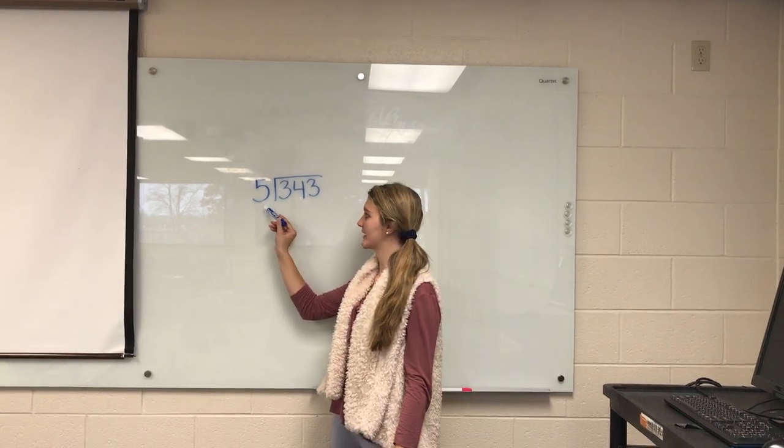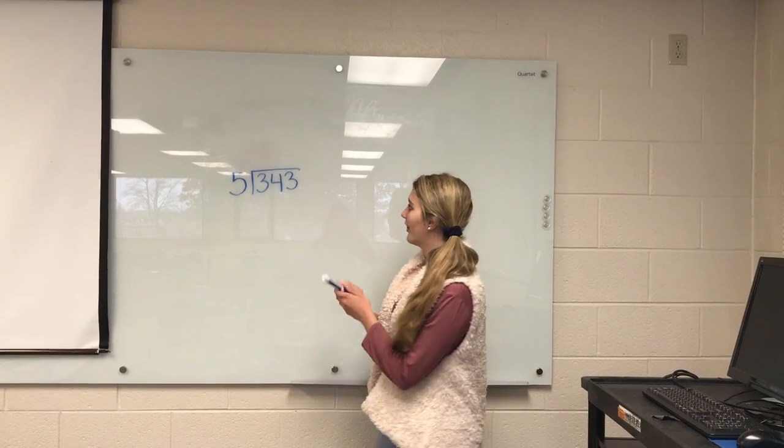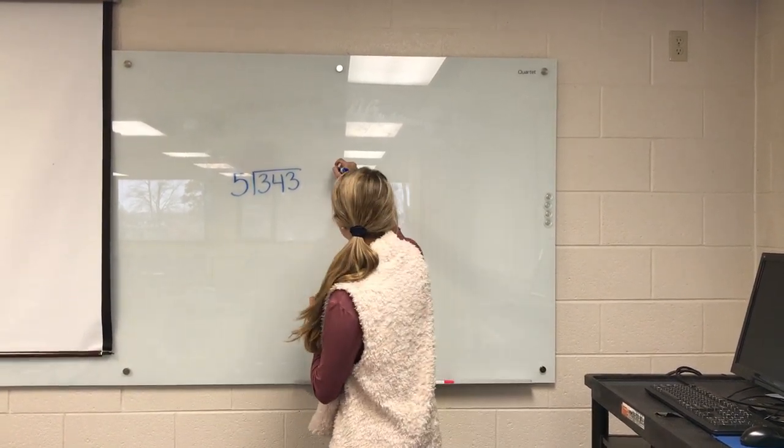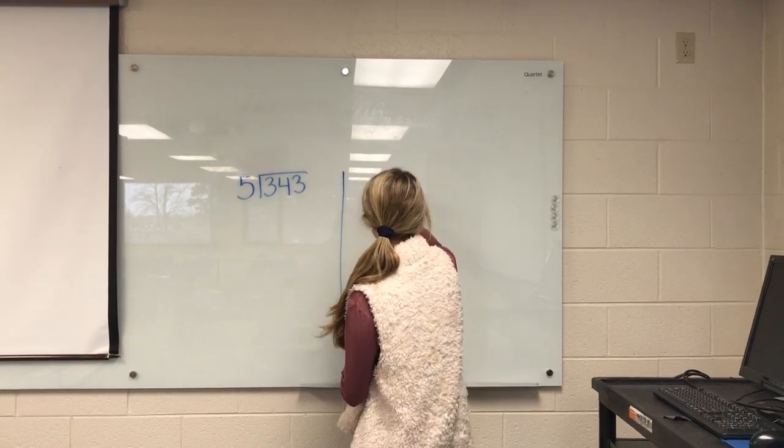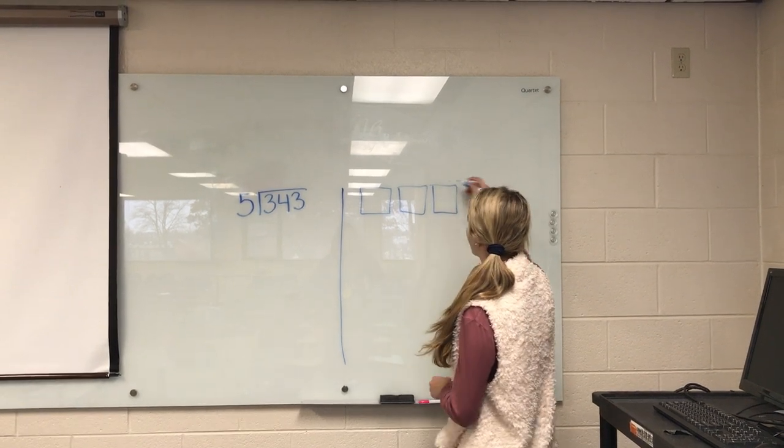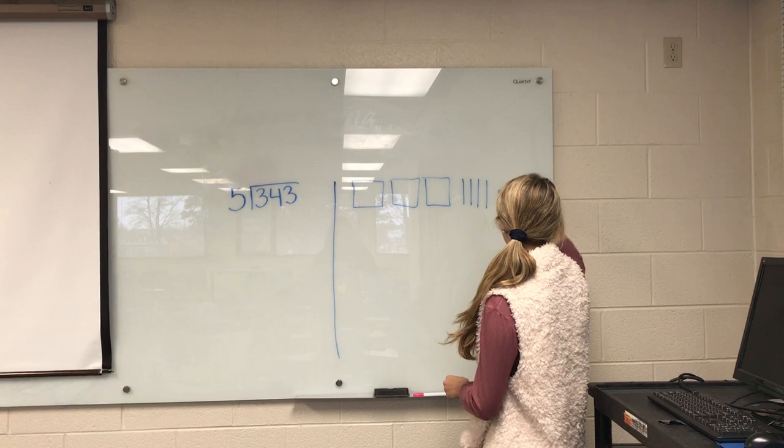5 represents the divisor, and 343 represents the dividend. This can be shown in base 10 blocks, and this is what it would look like. Let's look. 343.